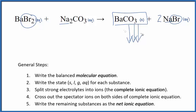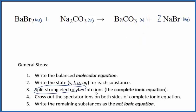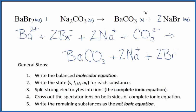So those are the states. Now we can split the strong electrolytes into their ions for the complete ionic equation. And that looks like this. And note that we don't split the precipitate, the solid apart, in net ionic equations. So we keep that together.